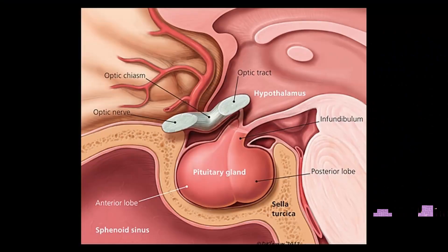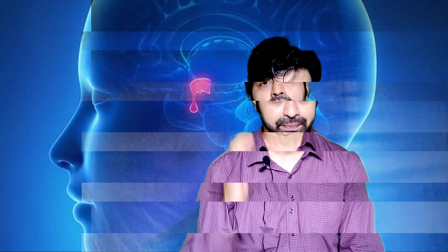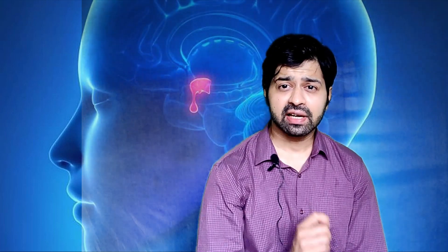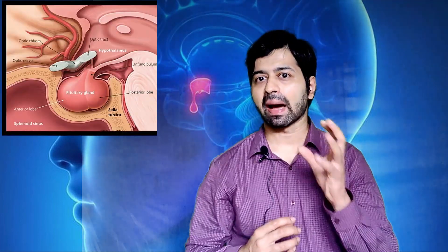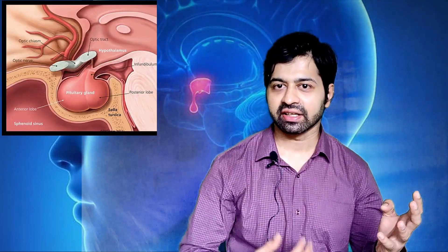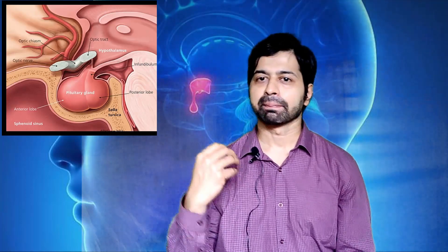We'll discuss more on this relation a little later. Now this pituitary gland is connected to a part of the brain called as the hypothalamus by the stalk of the pituitary. The pituitary gland can be divided into an anterior pituitary, the part which is in front, and a posterior pituitary, the part which is behind.